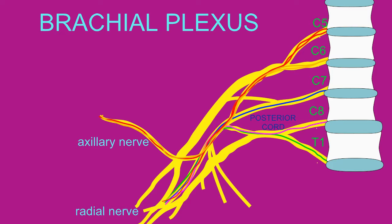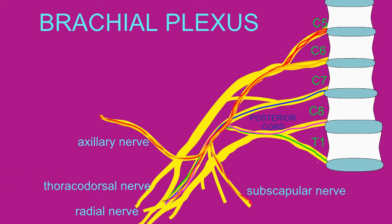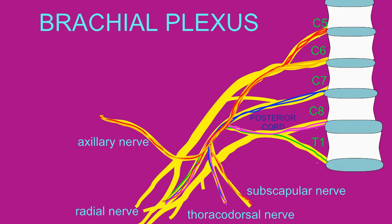The posterior cord also gives rise to the subscapular nerves, which innervate the subscapularis, and the thoracodorsal nerve, which innervates the latissimus dorsi.